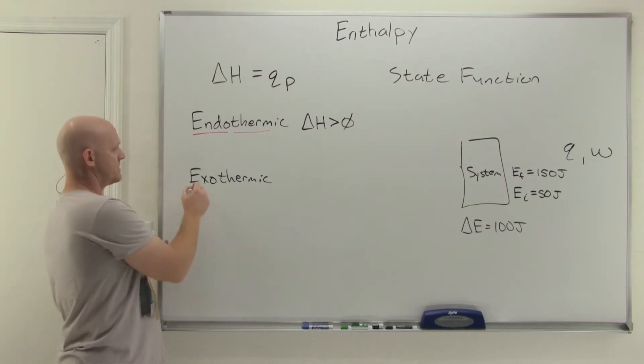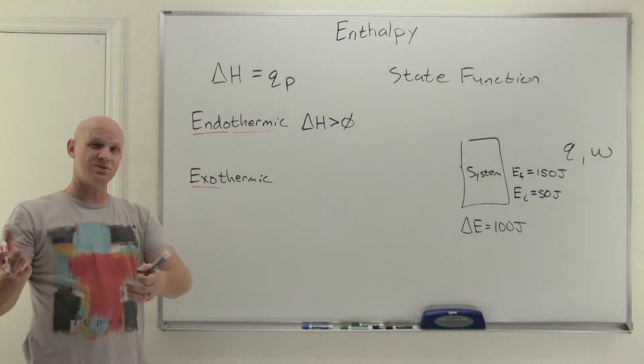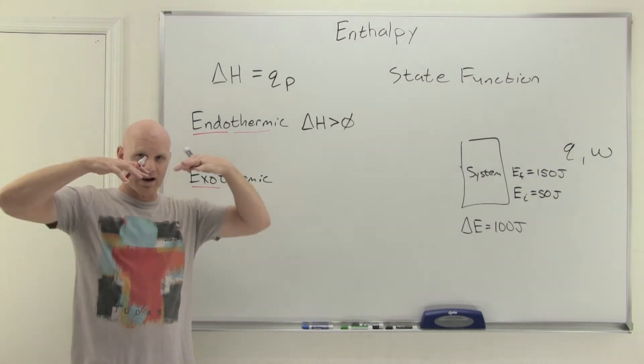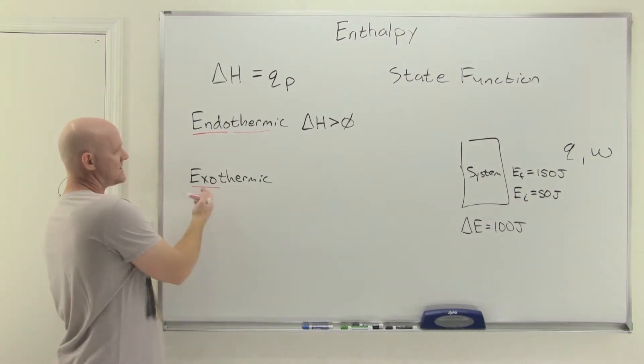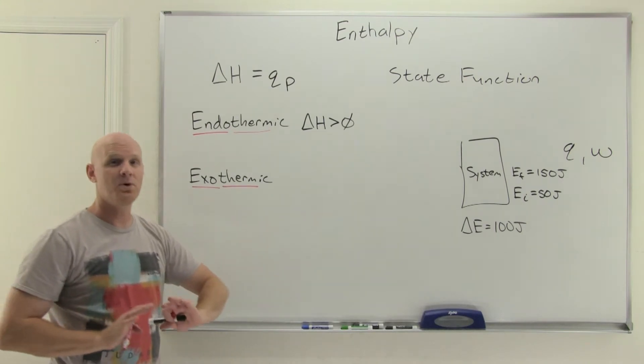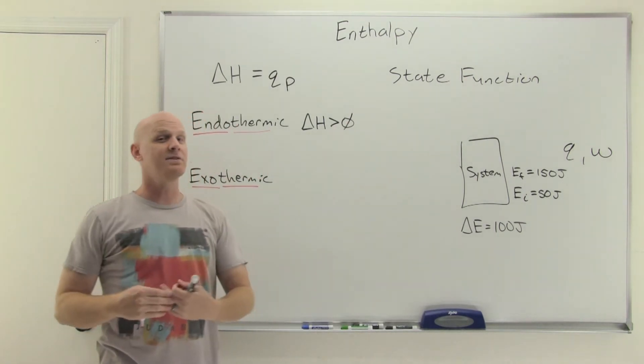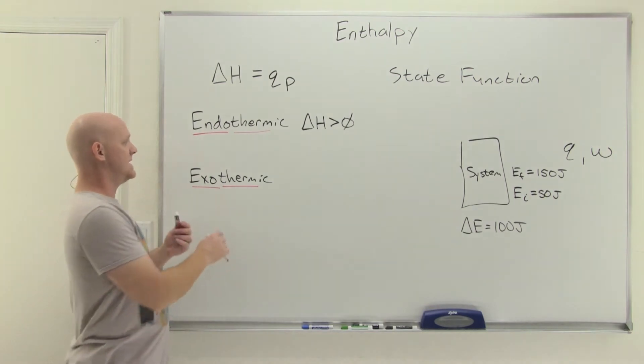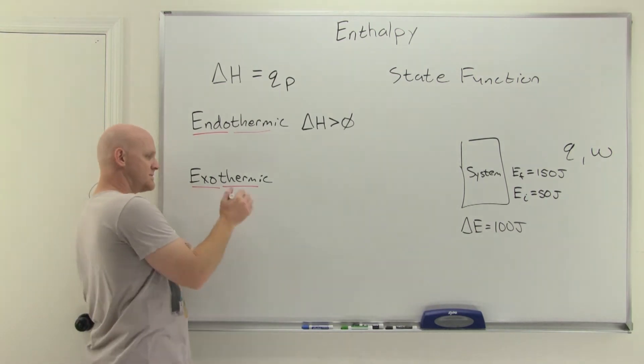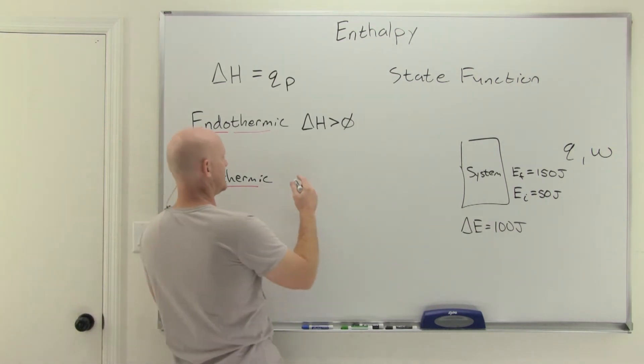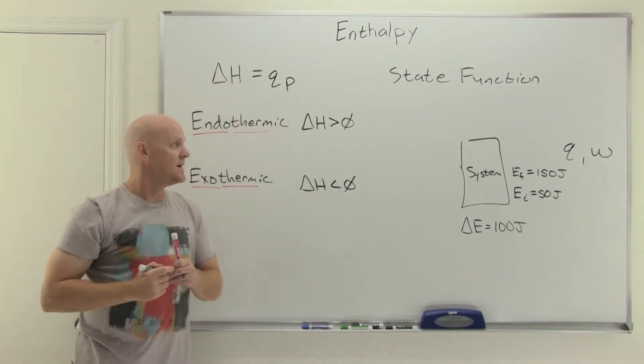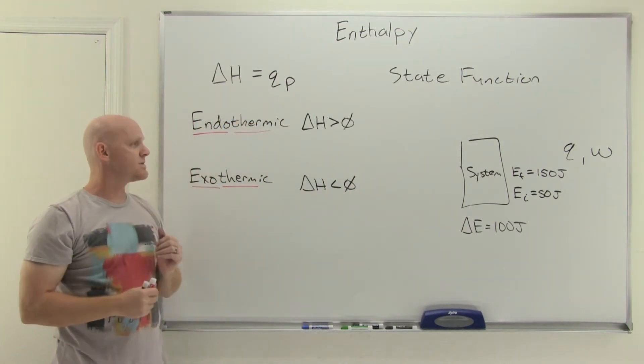Whereas exothermic, exo means outside like an exoskeleton, like bugs that have a skeleton on the outside. Exo heat, so outside heat, is a system putting heat outside of itself, giving heat off to the surroundings. If heat is leaving the system, then your heat would be negative and delta H would also be a negative number, i.e. less than zero. These are your new terms, endothermic and exothermic.